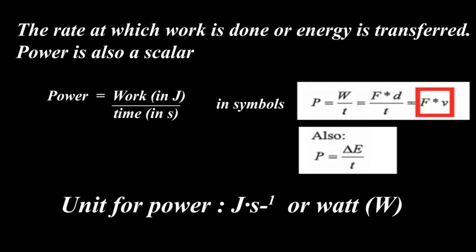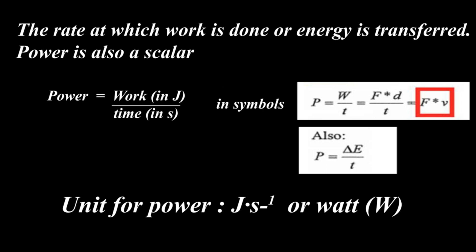We can look at it further: power is F times D over T. If we look at D over T, that speaks to us about velocity, because velocity is the rate of change of displacement. So from that perspective, we can also see that power is simply force times velocity — that is, P = F times V.